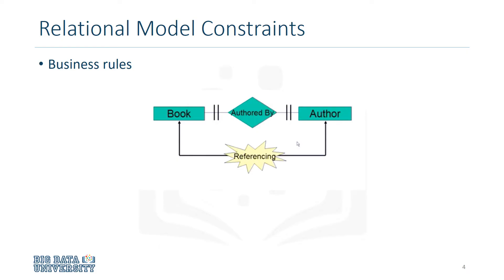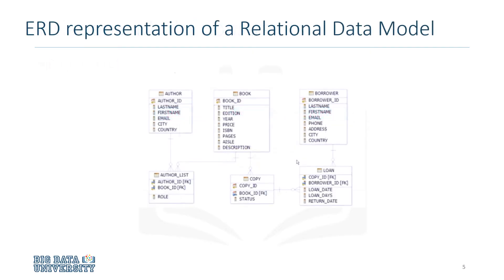In relational databases, referencing establishes data integrity between two relations. The entity relationship diagram represents the relational data model for the author entity and a book entity as part of a simplified library database model. Other entities have been added such as borrower, loan, copy, and author list.